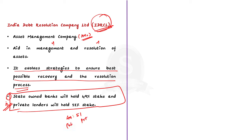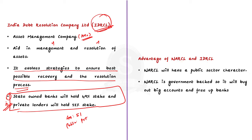Having covered all the basics of these two entities, let us look at their working with the help of a practical example. Let us assume Ms. Devi borrowed 200 crores from the State Bank of India to set up a business. But due to COVID-induced lockdown, the business failed and Ms. Devi failed to repay the entire loan of Rs. 200 crores. So for SBI, the loan given to Ms. Devi has become a stressed asset, and SBI is looking to sell off this asset. This is where NARCL will come in.